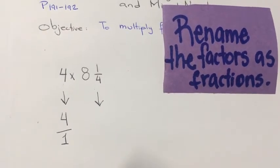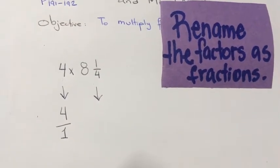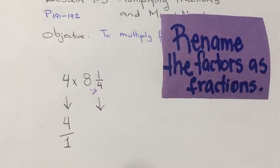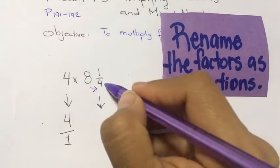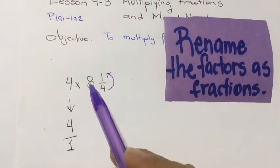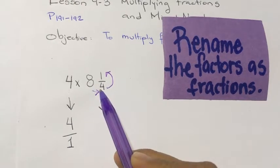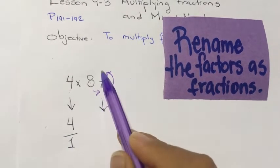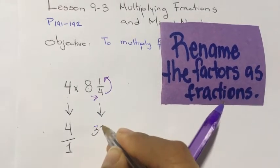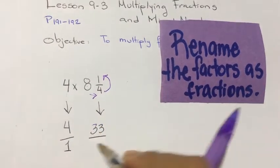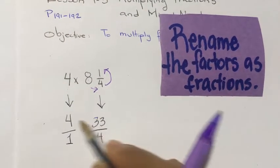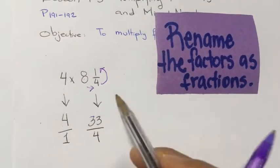How do we rename a mixed number as a fraction? First, we need to multiply the whole number times the denominator and then add the numerator. So 8 times 4 is 32, plus 1 is 33. We write 33 and copy the same denominator — now we have an improper fraction.